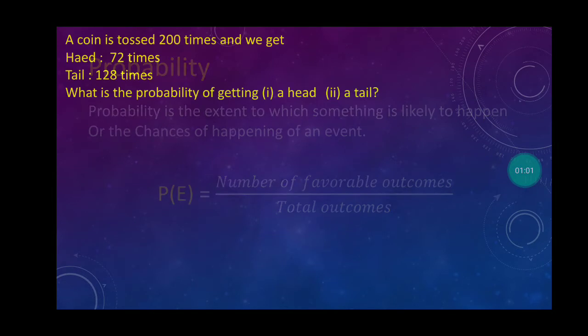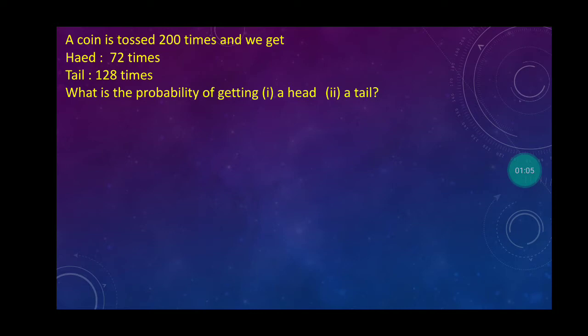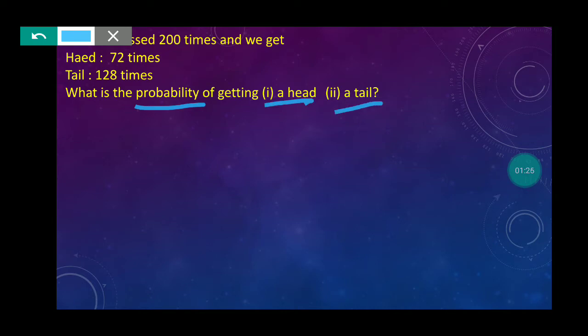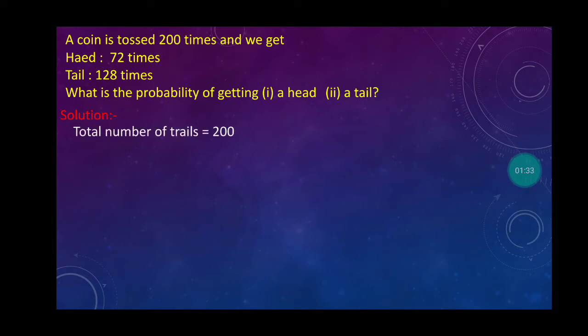For example, in question number one, a coin is tossed 200 times. When we toss a coin 200 times, either head will come or tail will come. Head came 72 times and tail is 128 times. Now we need to find the probability of getting head and tail.